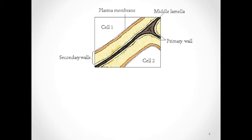Moving in from the outside towards the interior of the cell, we have a thin primary plant cell wall, followed by the secondary plant cell wall, which has quite a large diameter and has distinct sublayers that I will talk about in the later slides, followed by a very thin plasma membrane, which will then lead into the interior or the lumen of the cell.